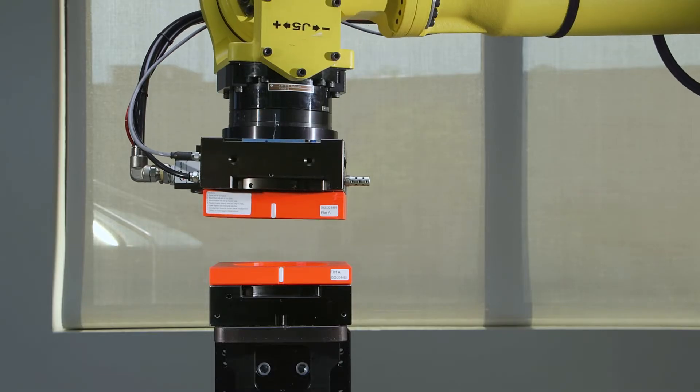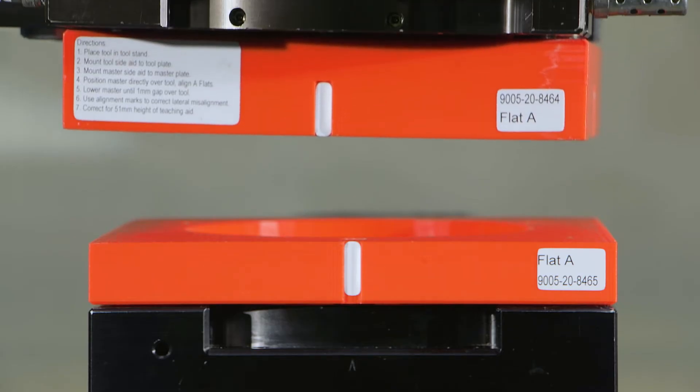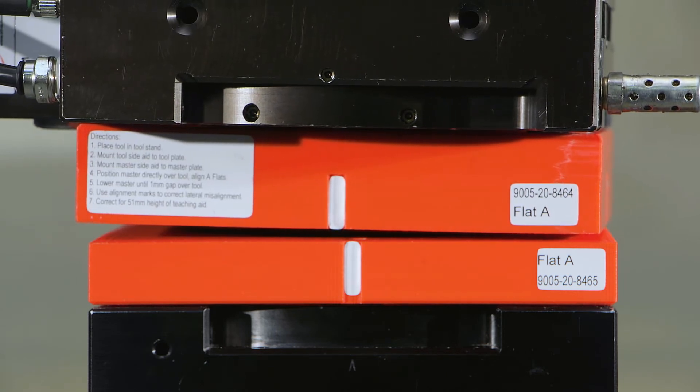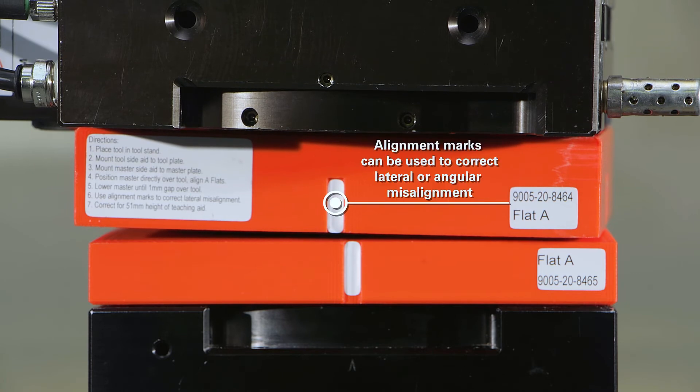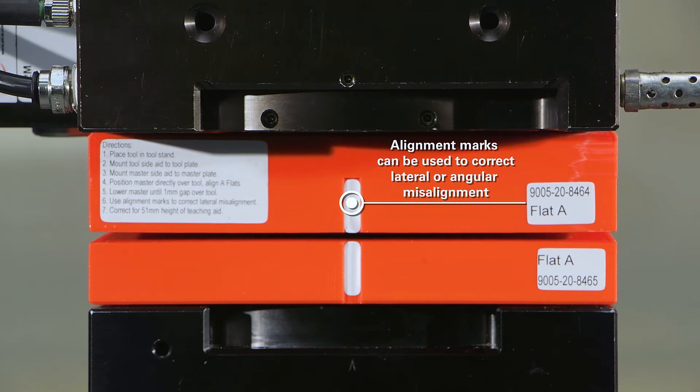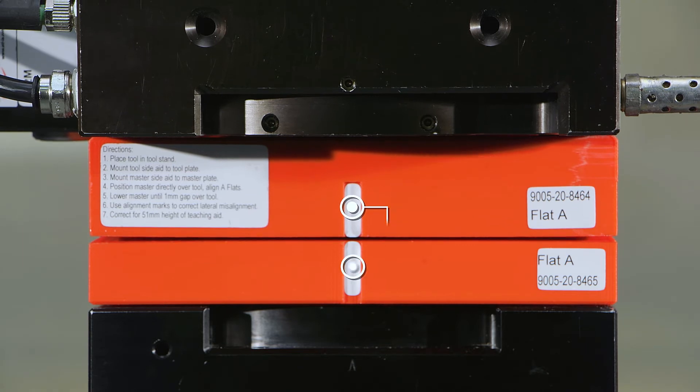Slowly move the master side T-Jade toward the tool side T-Jade until the teaching aids are approximately one millimeter apart. The mating faces and alignment marks on the body of each T-Jade can be used to correct any lateral or angular misalignment. When the alignment marks of the T-Jades match, the T-Jades are correctly aligned.